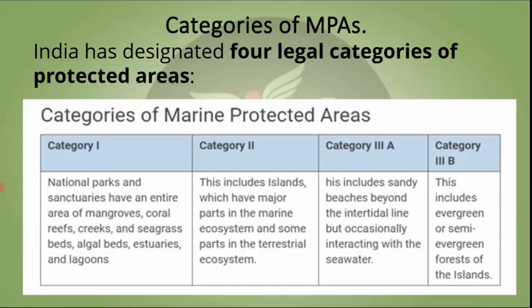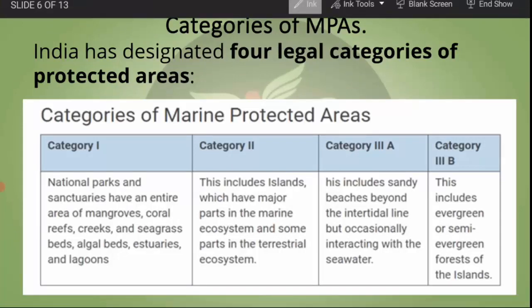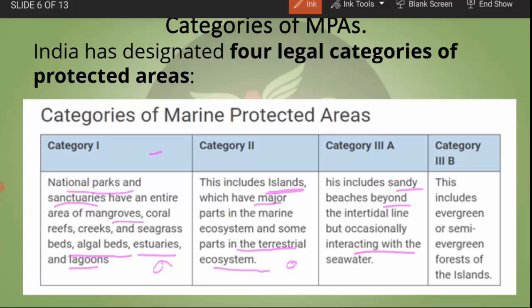There are four legal categories of protected areas in India. The first category includes national parks and sanctuaries whose entire area comprises mangroves, coral reefs, creeks, seagrasses, algae beds, estuaries, and lagoons. The second category includes islands that have major parts of marine ecosystem and some terrestrial ecosystem — Andaman-Nicobar and Sundarbans are good examples. Category 3A includes sandy beaches beyond the intertidal line that occasionally interact with seawater — they are somewhat far from the sea but still interact with it.